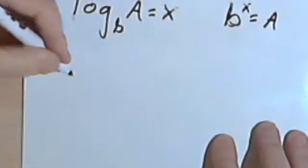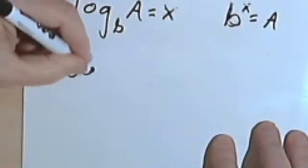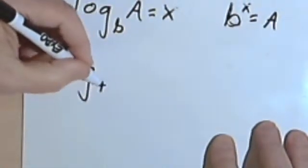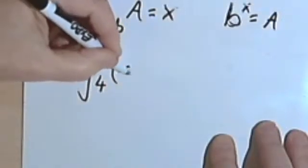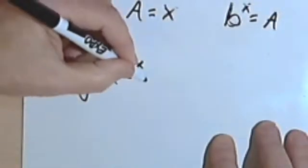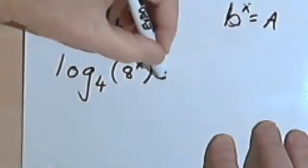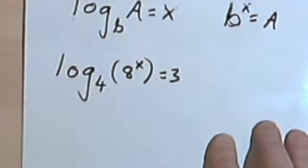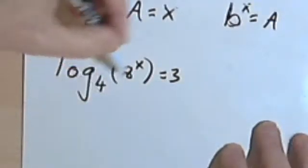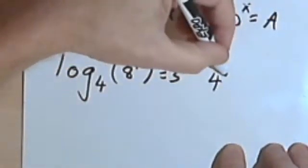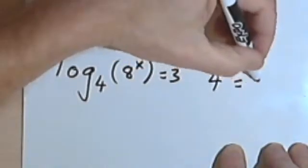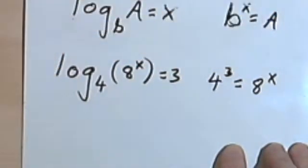Here's one with an exponent. The log base 4 of 8 raised to the x equals 3. Okay? Same procedure. 4 raised to the third power equals 8 to the x.